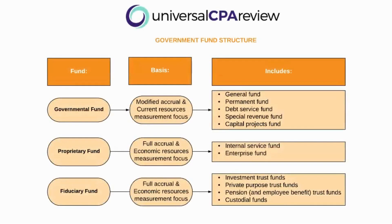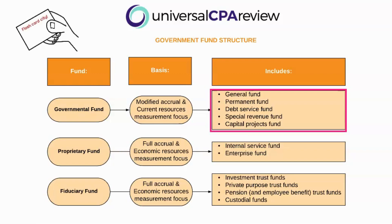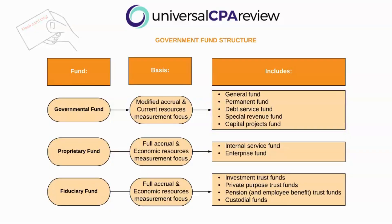What we're going to talk about now is going to be super memorizable, but also extremely important. It's very important that for your exam, you're able to pick up these governmental points. What we're talking about is allocating and classifying the different types of governmental funds and knowing how to categorize them in their respective fund type. Our governmental funds are going to have five special funds that you need to be able to identify and classify. This is going to be the definition of Flashcard City, so it's very important that we memorize our different types of funds.